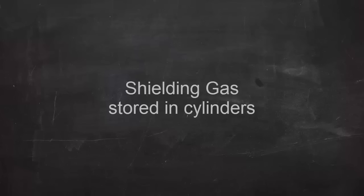So, in summary, MIG welding is an electric arc welding process. It uses a consumable wire electrode. Filler metal is added automatically. And the shielding gas comes from a high-pressure cylinder.